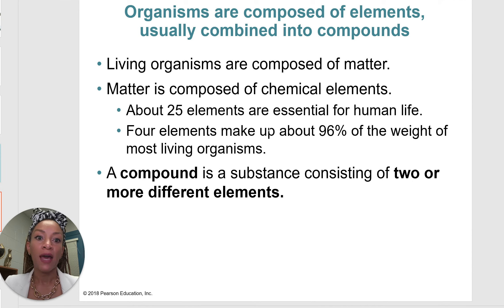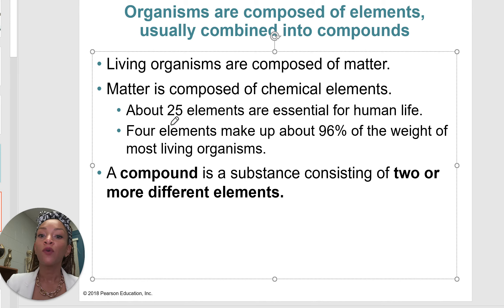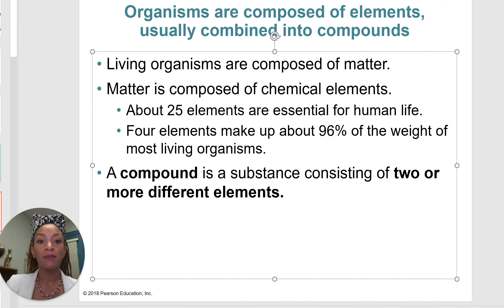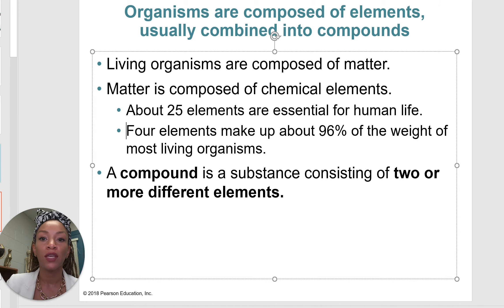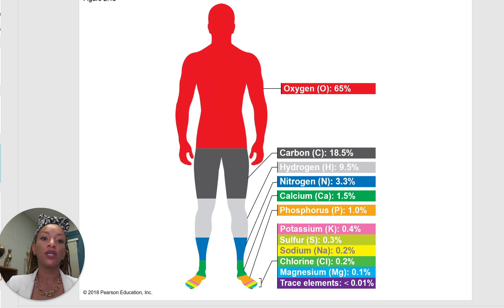There are about 25 elements essential for human life, but only four elements make up about 96% of the weight of most living organisms. A compound is a substance consisting of two or more different elements. We are carbon-based life forms, but most of our body is actually composed of oxygen — 65% oxygen, 18.5% carbon, about 9.5% hydrogen, and 3.3% nitrogen.